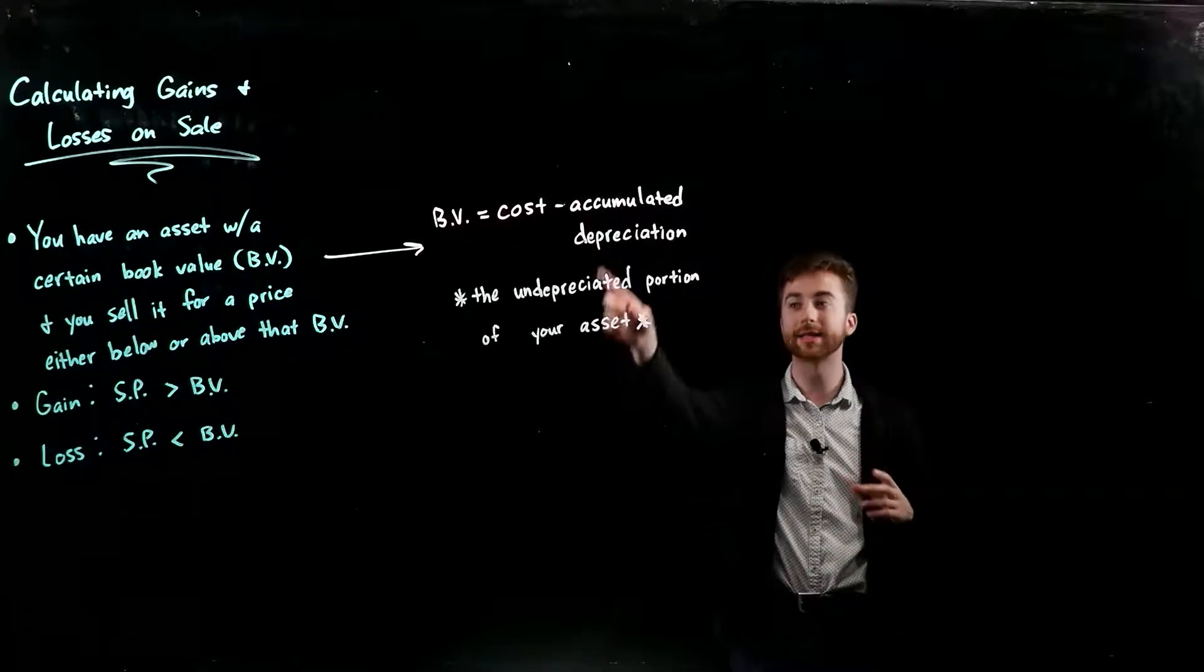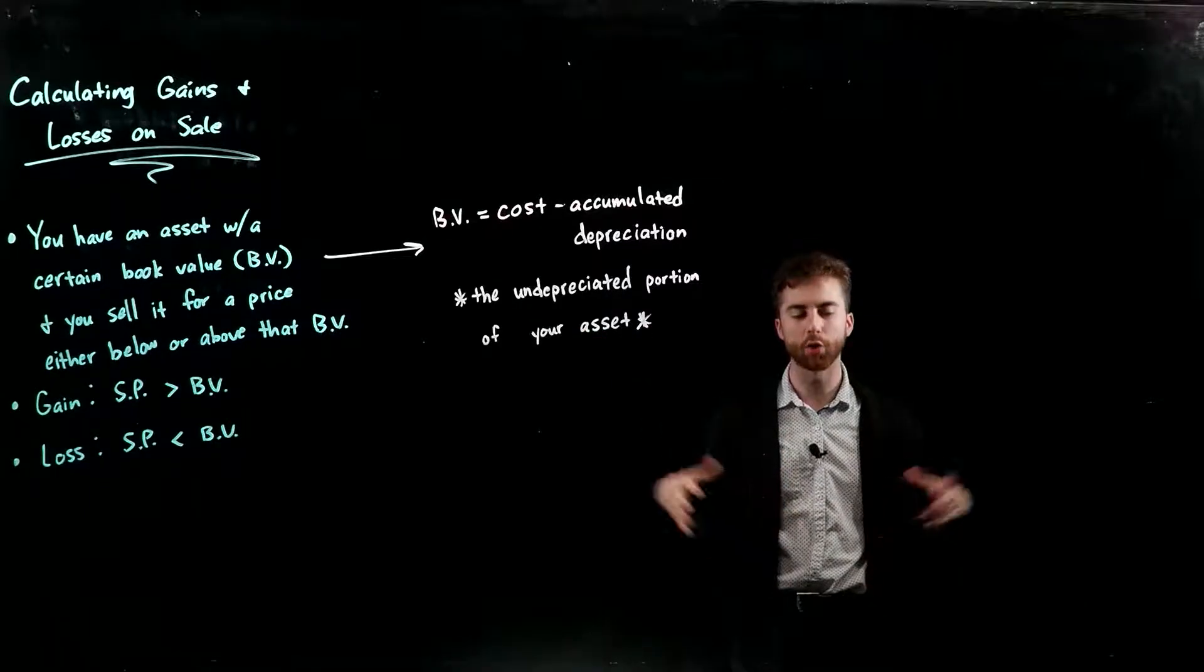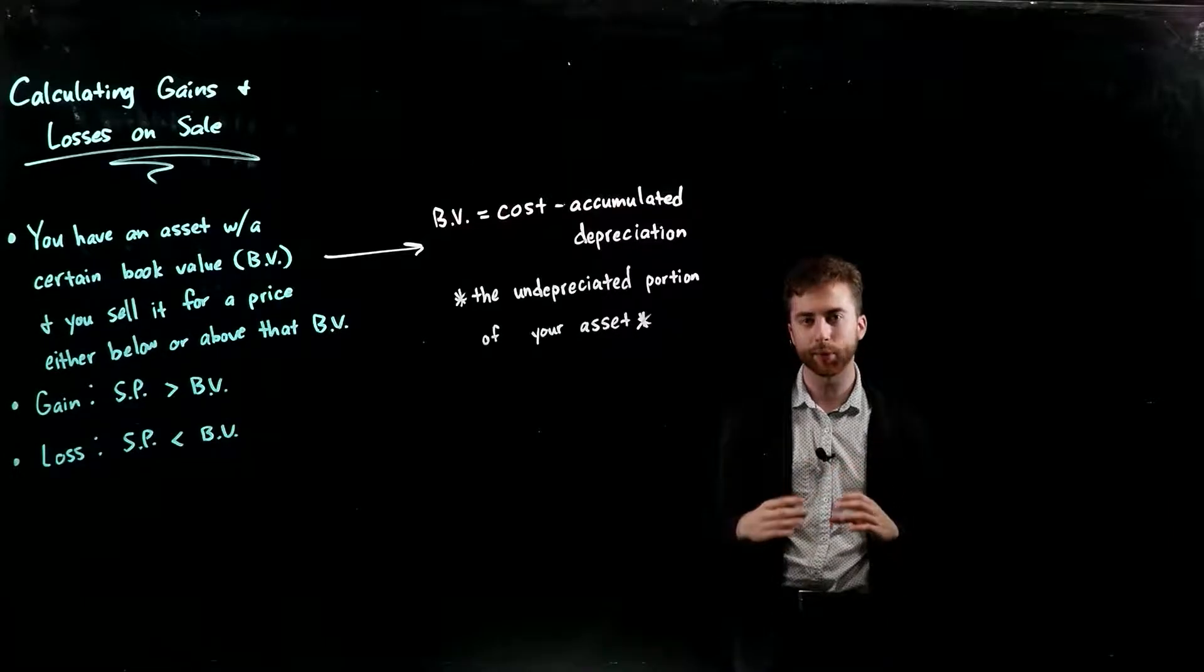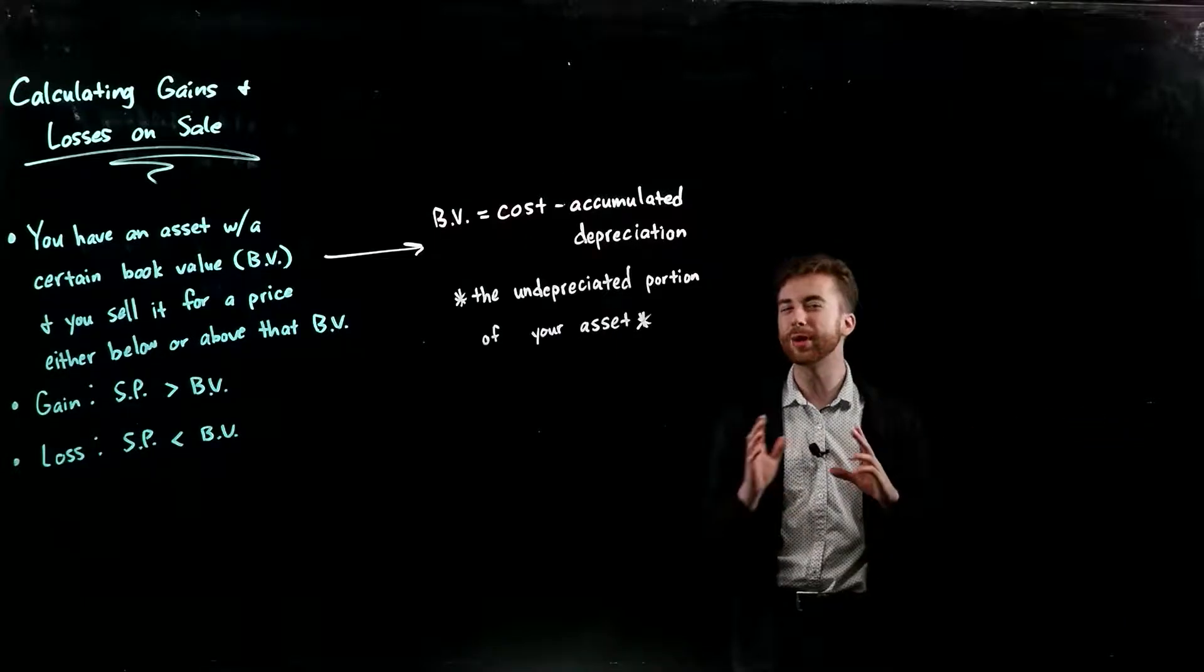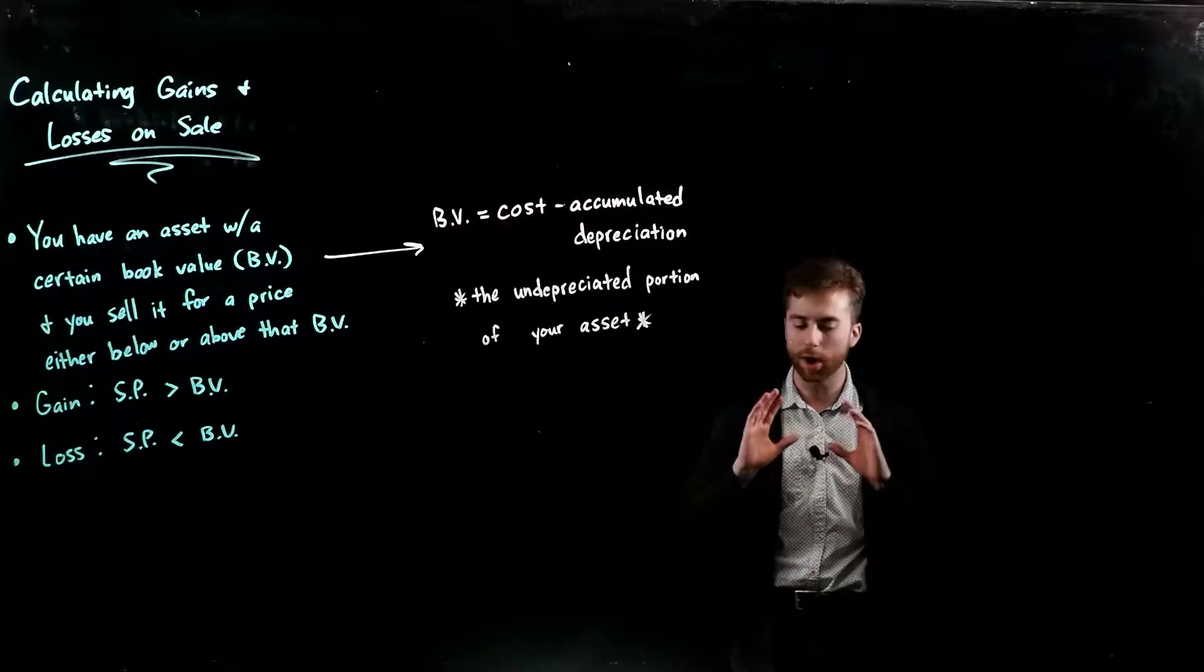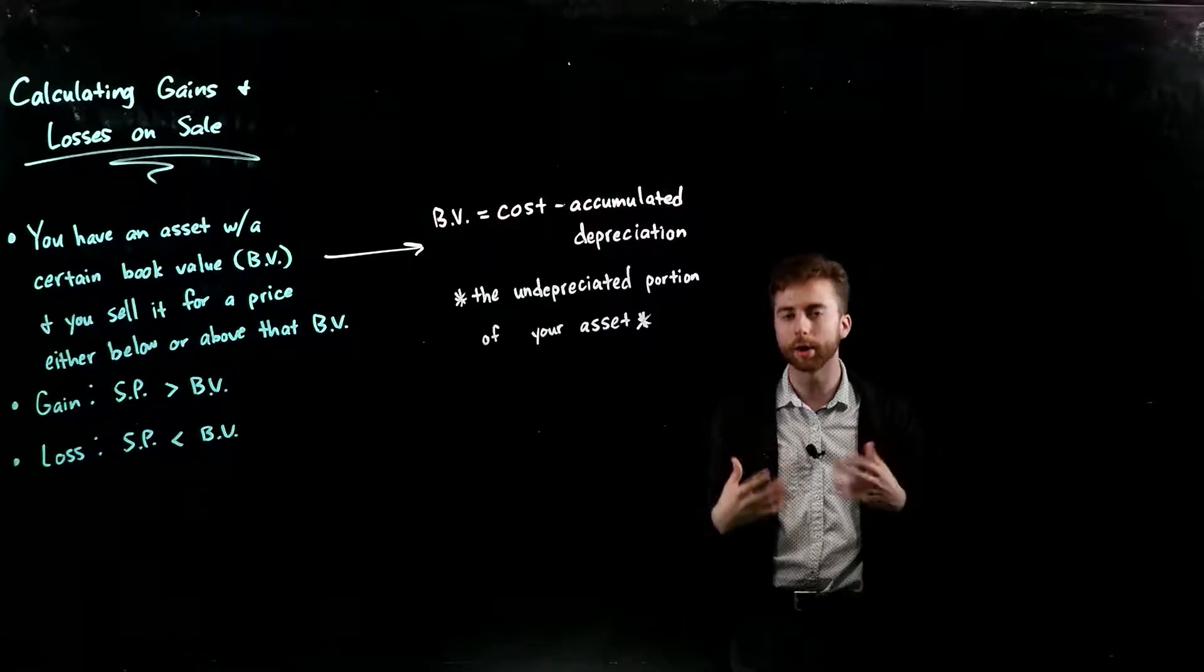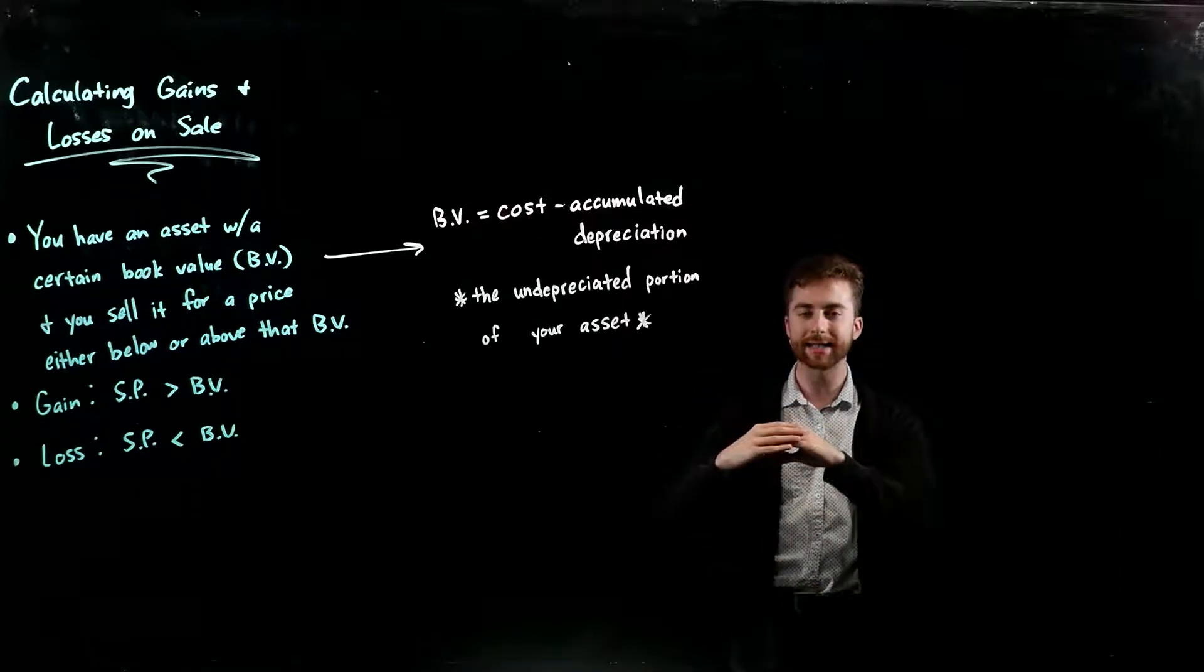Think of the book value - it's the cost that you paid for that asset minus the accumulated depreciation, or all the depreciation that you've incurred on that asset up to this point in time. When you take the difference between those two, it's really the undepreciated portion of your asset or the amount of that asset that still remains to be depreciated. You can think about it like it's the value of your asset at that point in time. It's not literally what it's worth right now - on our books it's still recorded at historical cost, but wrap your head around the concept of book value. It's basically what it's worth on our books right now, meaning that it's the cost less what has been depreciated off of it.